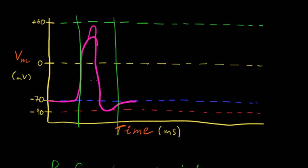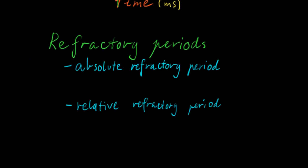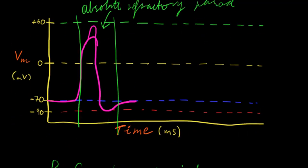They're a lot quicker to act than the potassium ion channels, but here we have the absolute refractory period. And that lasts generally one or two milliseconds.